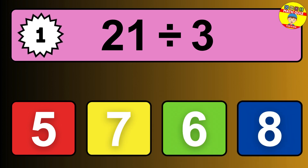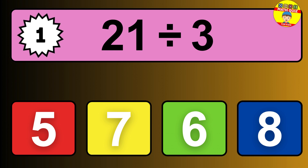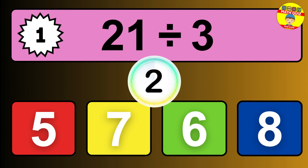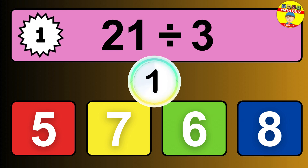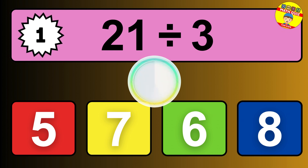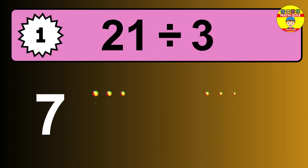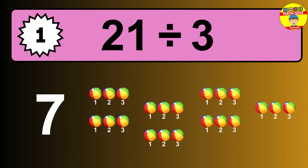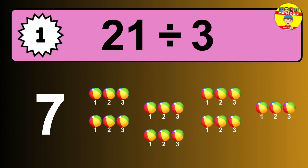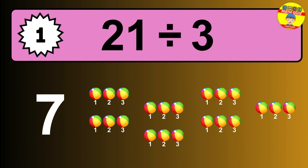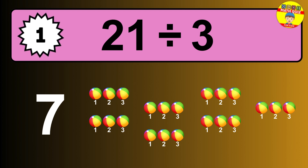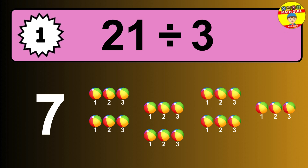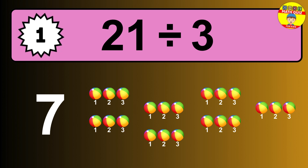21 divided by 3 is... time to think. Let's go to the solution. Divide the number 21 by 3. Each group contains 3 units, so dividing 21 by 3 results in 7 equal groups. Thus, the result is... 21 divided by 3 equals 7.